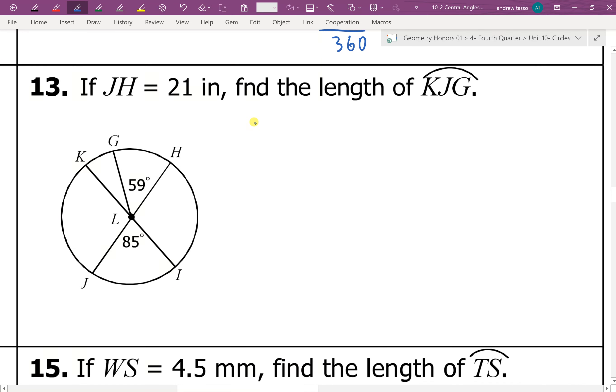Next one. So JH. Notice this time they're giving us the diameter. So JH is the diameter, which means the radius would be half of that. So if I divide that by 2, I get 10.5. Now I'm looking for this measurement of the arc, KJG. So let's look at all the arcs here.